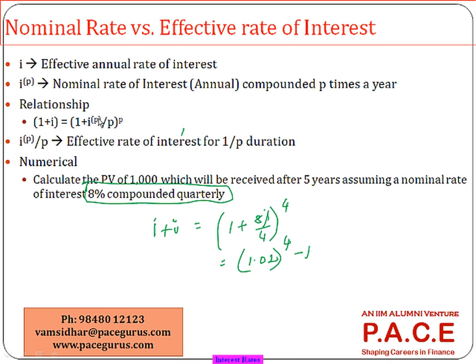The only requirement is being comfortable with the conceptual part. We need to first understand whether the interest rate given is a nominal rate or an effective rate, and if nominal, how to convert it to an effective rate, and then how to find the discounting factor. The discounting factor always applies based on the effective rate of interest or discount.